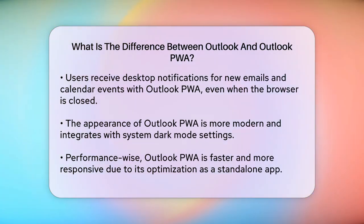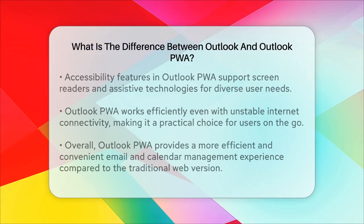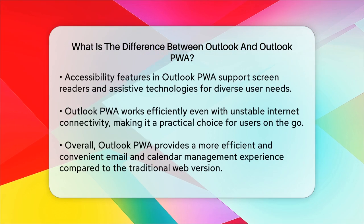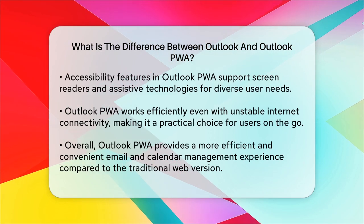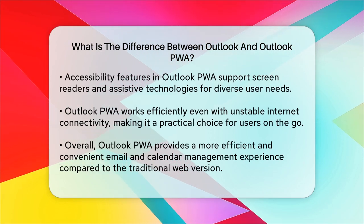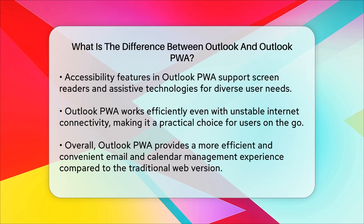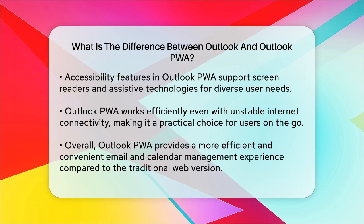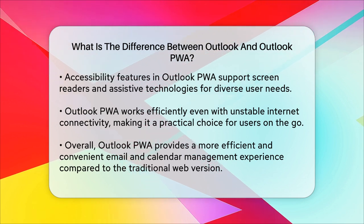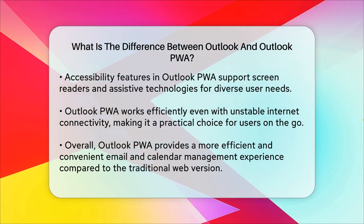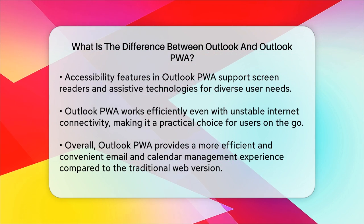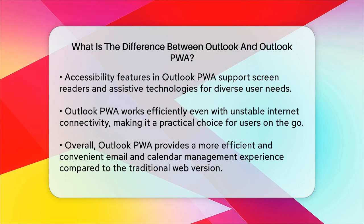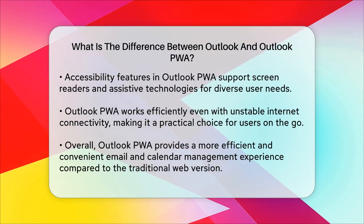Accessibility is another area where Outlook PWA shines. It supports screen readers and other assistive technologies, making it more inclusive for users with different needs. You can access your email from any device with a web browser, and it works efficiently even with patchy internet connectivity.